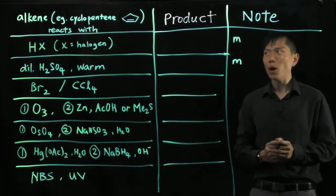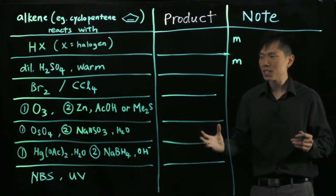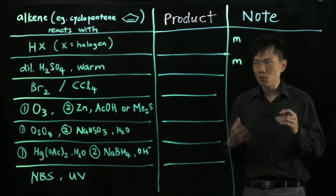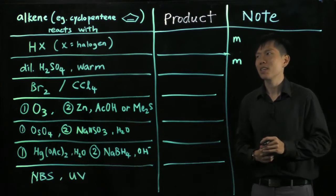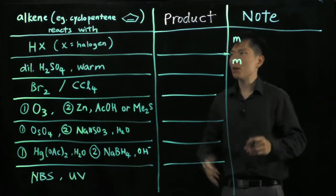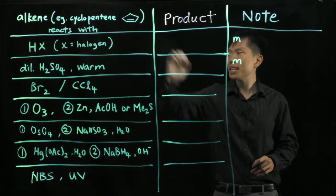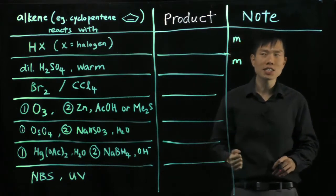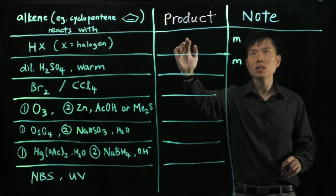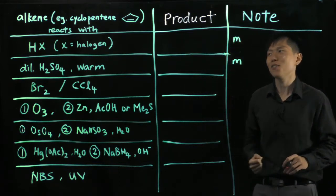There is a reason why I'm going to use cyclopentene because some of these reactions they are what we call stereospecific and regiospecific. You'll see later on. Now how do you read this table? We begin with cyclopentene and we react this separately with the set of reagents. I will draw the products to you and I will note some things that you're going to take note of.